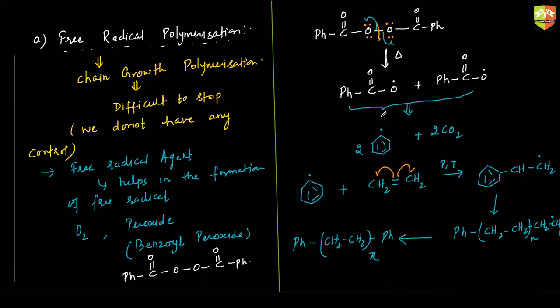The repeating unit is just CH2–CH2. The monomer is CH2=CH2, so with that only we get the repeating unit. For homopolymers, the repeating unit is not that important; for copolymers it is important — we'll see that also.